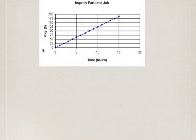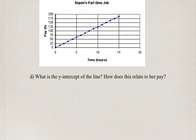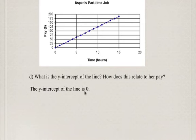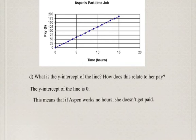We've been talking about slope, but we've also been talking about y-intercept, and we have to realize that is an important part of identifying the equation of a line. We don't have y here — we've got to think about this as pay, even though it's on our y-axis. The y-intercept is where the line crosses the vertical axis. It crosses at (0, 0), so the y-intercept is 0. How does this relate to her pay? If she doesn't work any hours, Aspen doesn't get paid. Simple as that.